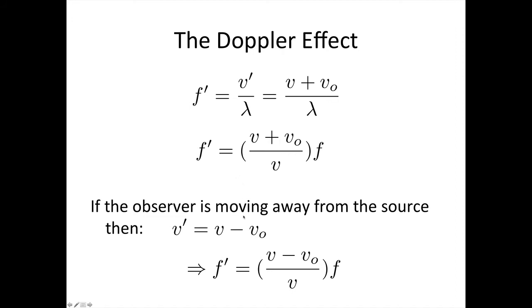Now if the observer is moving away from the source, it takes longer for the waves to catch up to her, then the observed velocity of the waves through the medium is given by V minus the velocity of the observer. So in this case, the frequency measured by that observer is given by V minus V_O over V times F. Remember V here is the velocity of the waves through the medium.